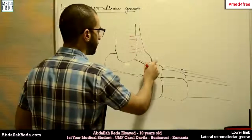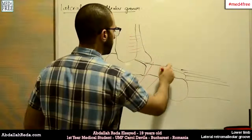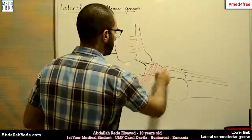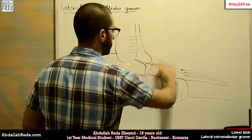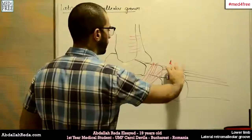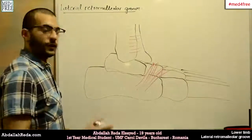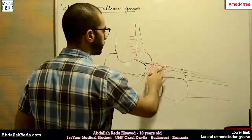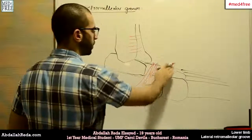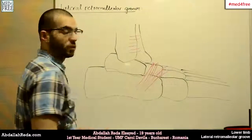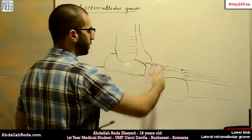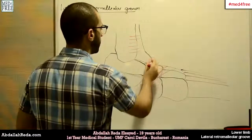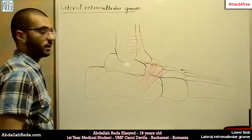There's another retinaculum found in this region called the inferior extensor retinaculum. It has two sides: one turns to the plantar aspect of the foot and attaches there, and the other attaches on the tibia.